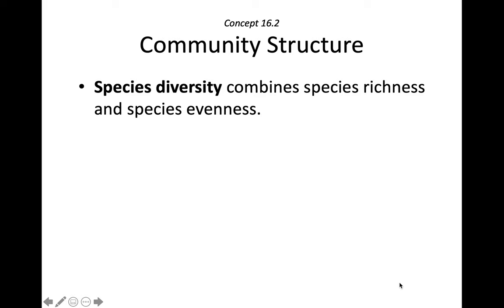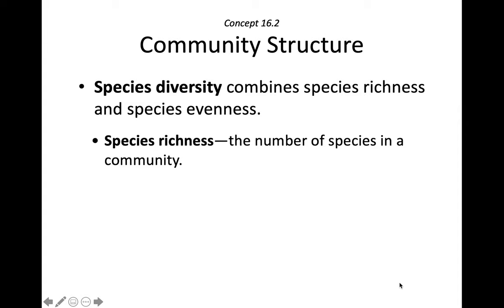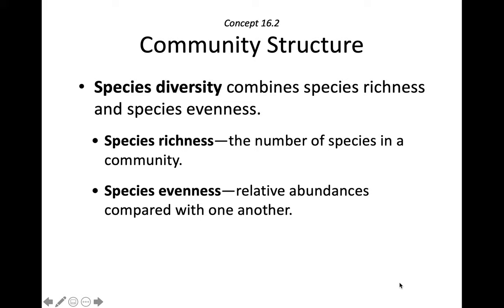Something that we call species richness and something that we call species evenness. Species richness is simply the number of species in a community, and species evenness is the relative abundance of those species compared with one another.